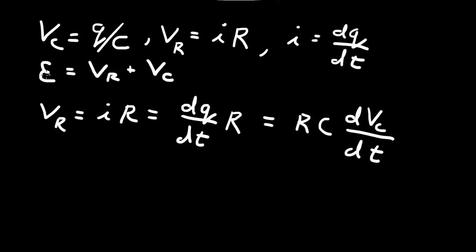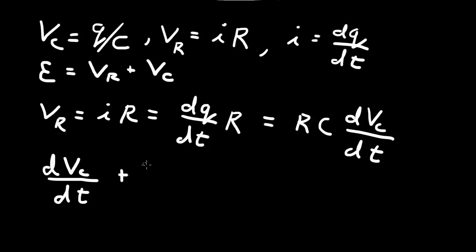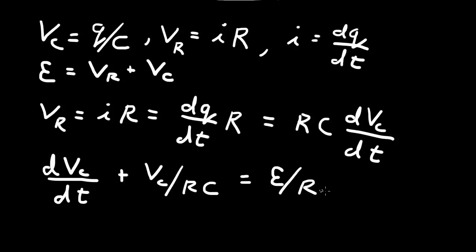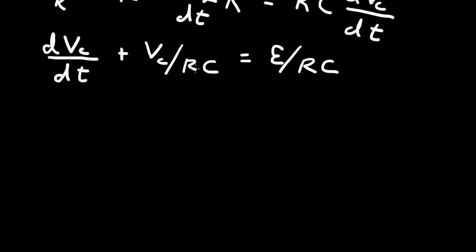We can now eliminate Vr in Kirchhoff's law, giving RC · dVc/dt + Vc = E. Dividing through by RC, Kirchhoff's law becomes dVc/dt + Vc/(RC) = E/(RC). This is a first-order linear differential equation. The initial condition is that the voltage across the capacitor at t = 0 is zero.